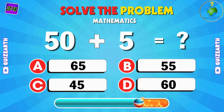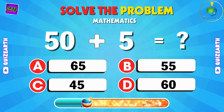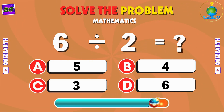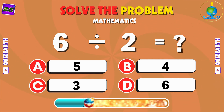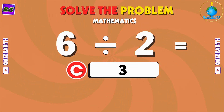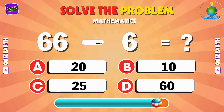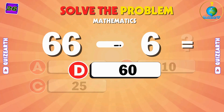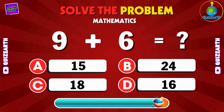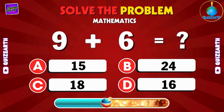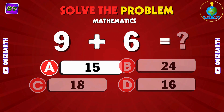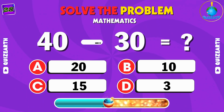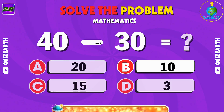Add 50 and 5 — a quick one. Can you get the total right away? B: 55. Divide 6 by 2 — easy, right? C: 3. Subtract 6 from 6. D: 0. Add 9 plus 6 — think fast. A: 15. Subtract 30 from 40 — what's left? B: 10.